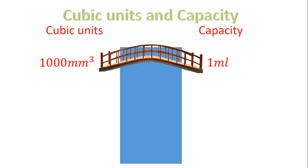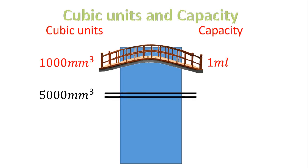Let's look at our second bridge. One thousand millimeters cubed is the same as one milliliter. So if I have five thousand millimeters cubed, what do I do to one thousand to get five thousand? I multiply by five. So for capacity, I take my one milliliter, multiply by five, and that gives me five milliliters. In other words, five thousand millimeters cubed gives me five milliliters.